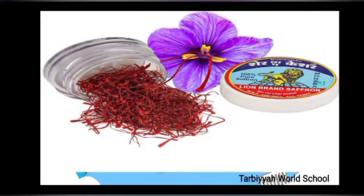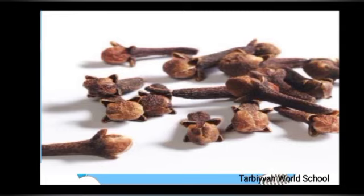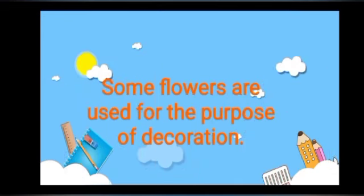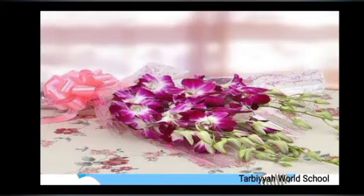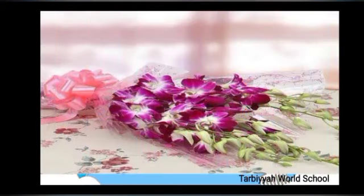You can see the picture of pomegranate and its flower. This is clove — in Hindi we call it 'long' — used to add flavors in food. Some flowers are also used for the purpose of decoration, as you can see in these pictures.